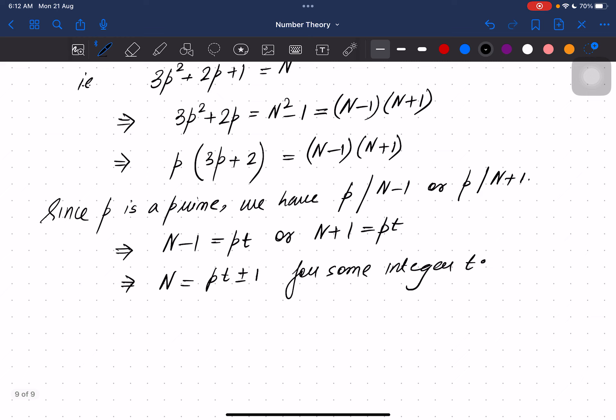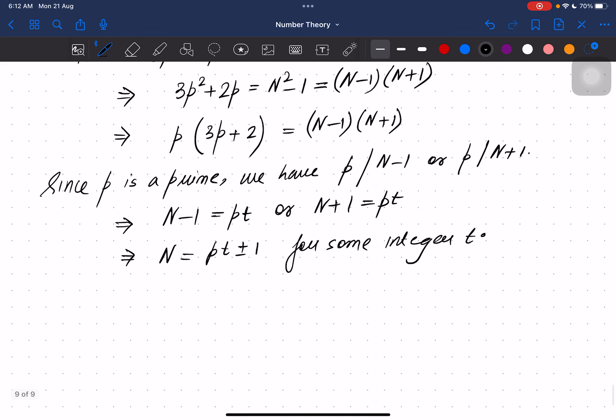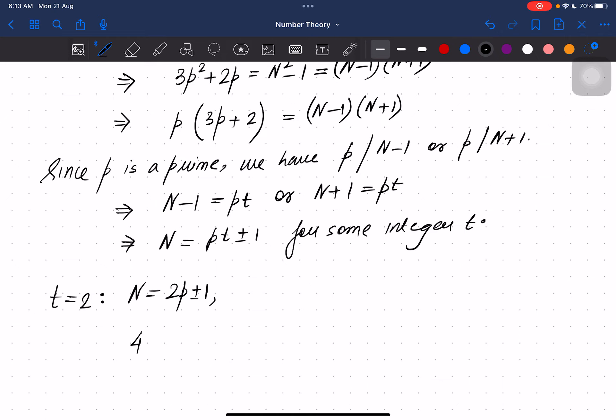Let us check what happens if t equals 2. Then I have N equals 2p ± 1. You can manually check what happens. I have N-1 and N+1. In that case I have p(3p + 2) equals 4p² ± 4p.